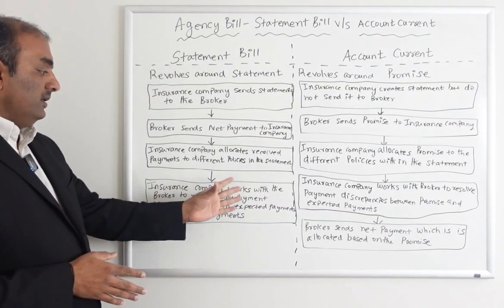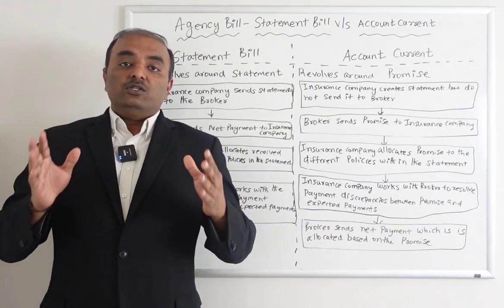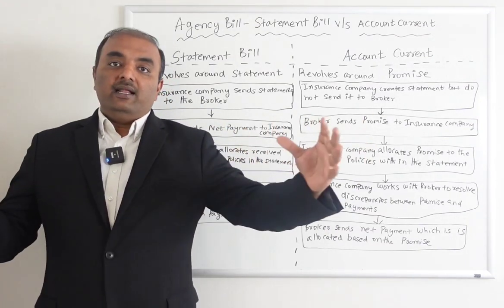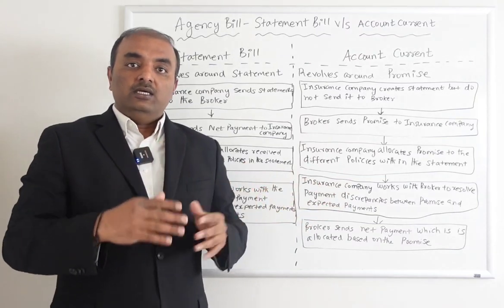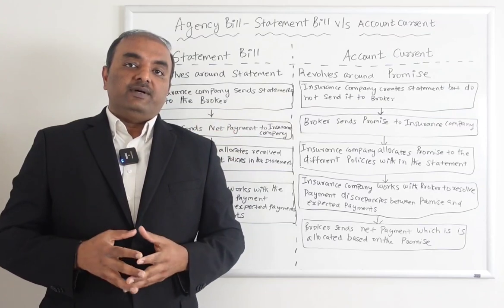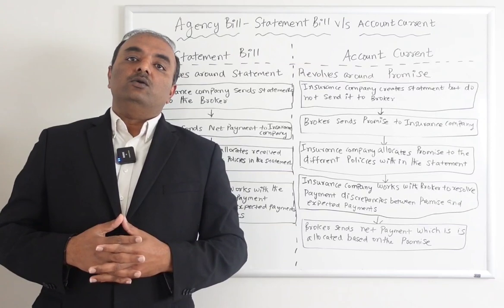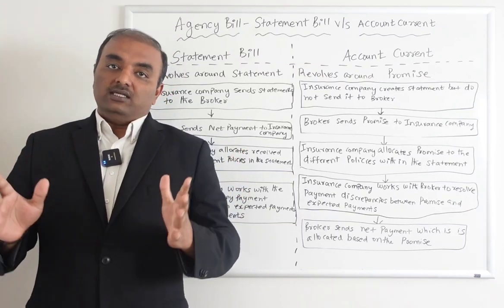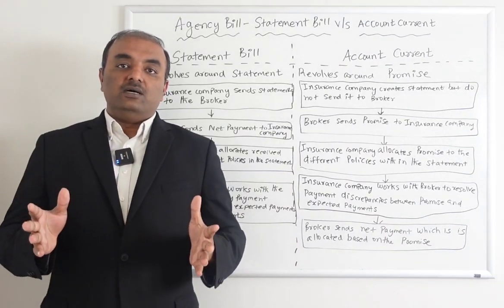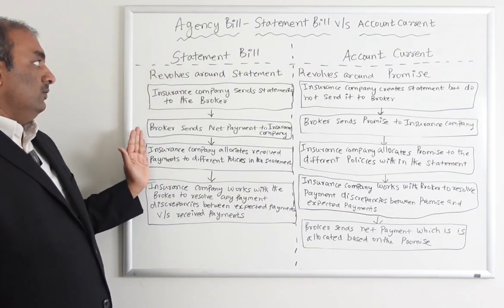The final step is the insurance company working with the broker to resolve any payment discrepancies. Because it's not a one-to-one mapping — it's one insurance company handling payments from multiple customers through a broker — it is very possible that the insurance company is expecting $25,000 for 10 customers, whereas the broker sent only $21,000, creating a discrepancy of $4,000. Whatever discrepancies the insurance company sees, they will work directly with the broker to handle them. That's how statement bill works.